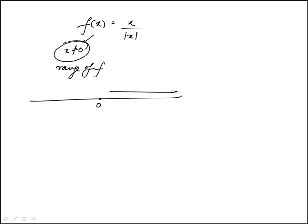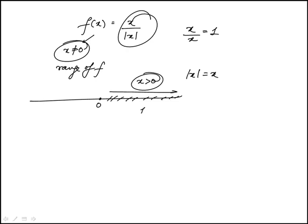So let's look at the positive case. When x is positive, the absolute value of x is x. This equals x over x, or 1. So all these numbers where x is greater than 0 give us an output equal to 1.